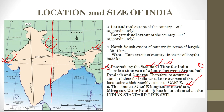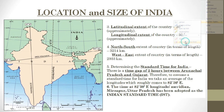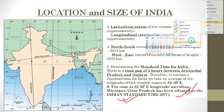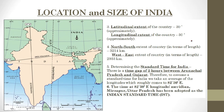That is why we have adopted 82 degrees 30 minutes east, which passes through Mirzapur in Uttar Pradesh when it first enters India. Since it is the average of both extreme longitudes, the time at this meridian has been adopted as the standard time for India, and we call it Indian Standard Time. The clocks which read time at this place — Mirzapur, Uttar Pradesh — have been adopted as the standard time for the whole country.